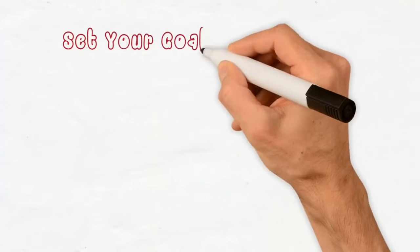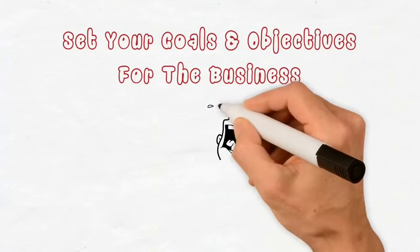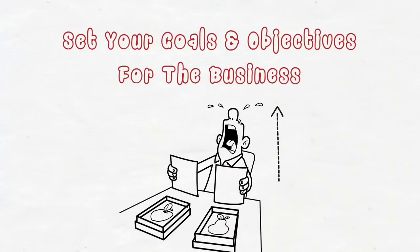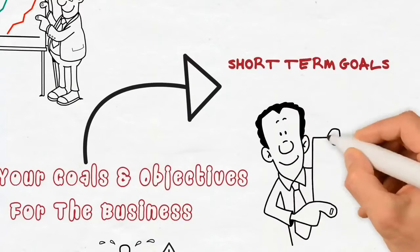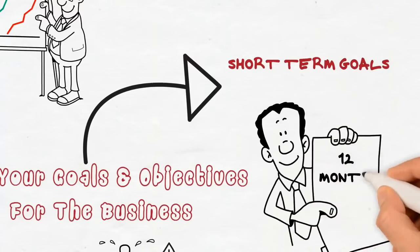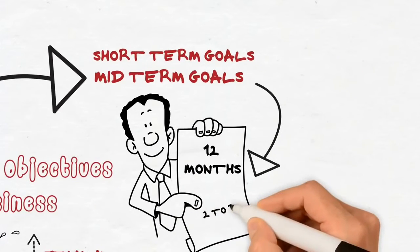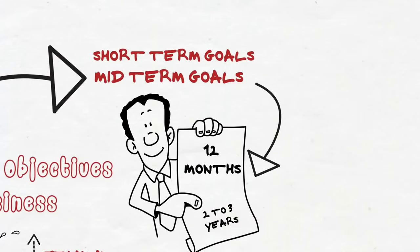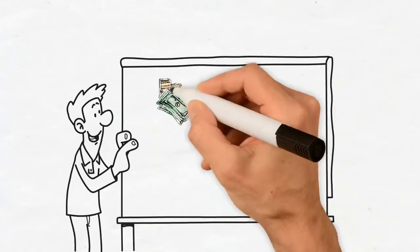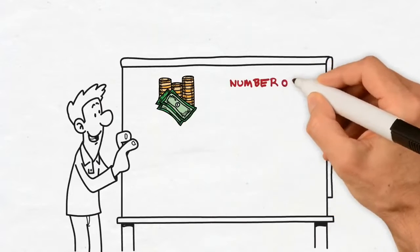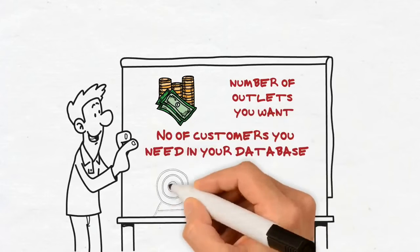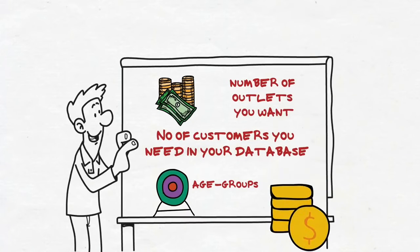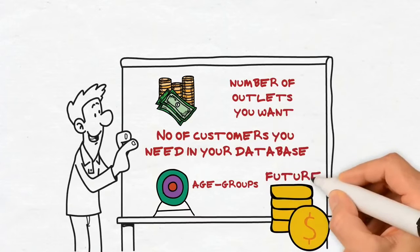Step 2: Set your goals and objectives for the business. Never assume that your goals need to be small to accommodate your limitations. Think big. Clearly define your short-term goals, the ones that you wish to achieve within 12 months, mid-term goals, those that will take between 2 to 3 years, and long-term goals. Consider all aspects, such as the revenue you wish to generate, number of outlets you want, the number of customers you need in your database, the target population and age groups, as well as the amount of passive income that needs to be generated in future.